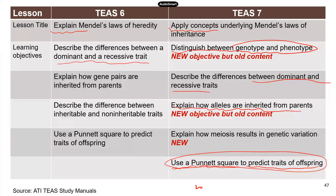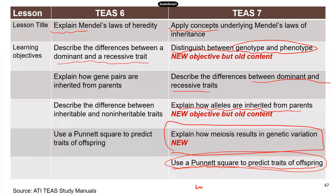There is a new objective related to meiosis: you need to be able to explain how meiosis results in genetic variation. I touched on this briefly in the meiosis lesson. There are primarily two ways meiosis contributes to genetic variation in offspring, because all the gametes can be genetically unique, and we're going to talk about those two factors here.